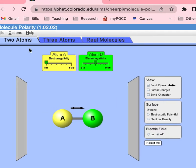It says make atom A more electronegative than atom B, less electronegative, using the sliders. So atom A is going to be more electronegative and atom B is going to be less electronegative. Click on 'Bond Dipole' and 'Partial Charges.'